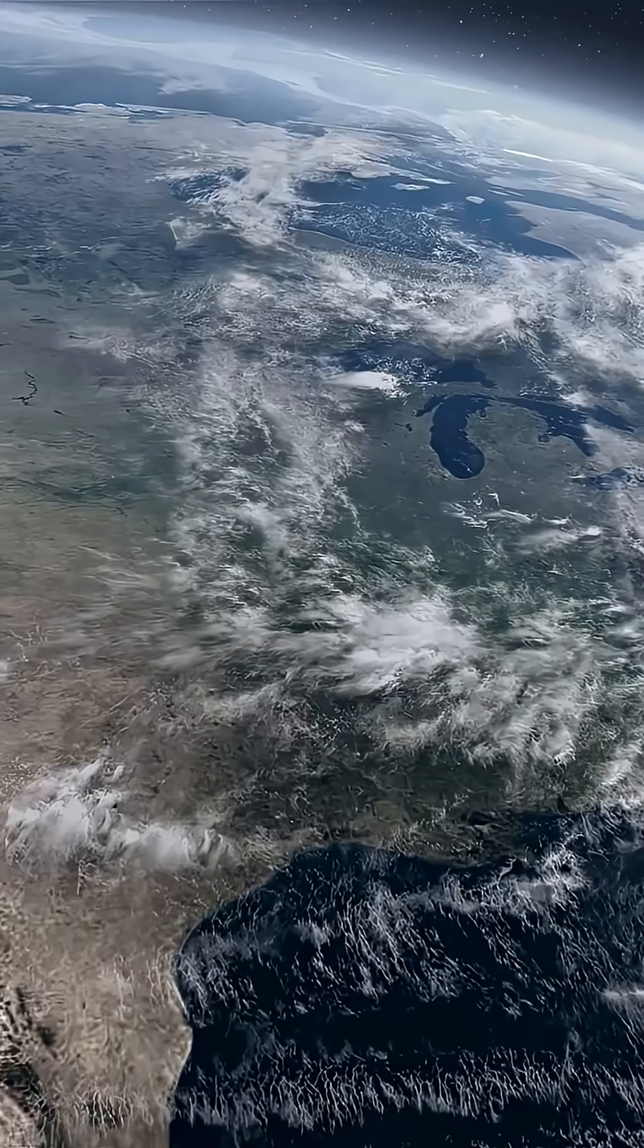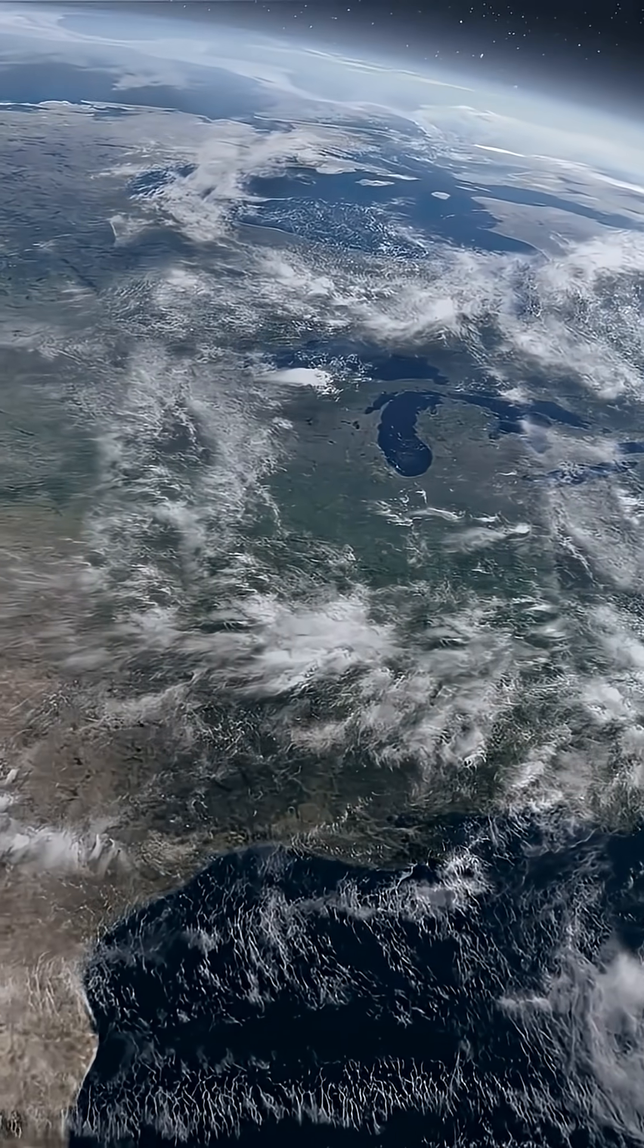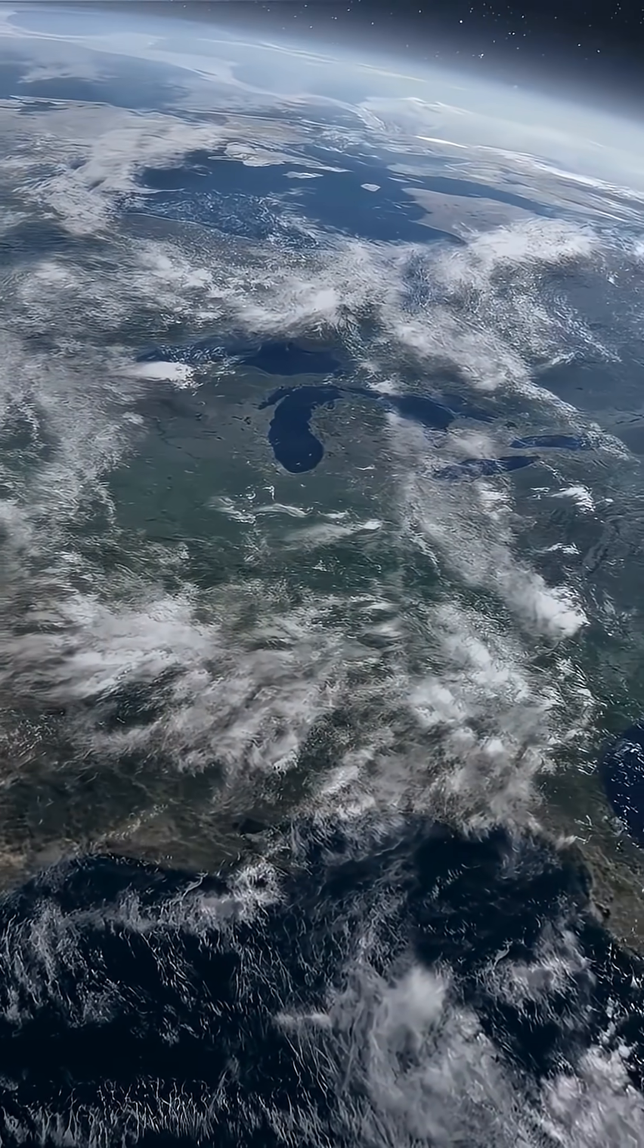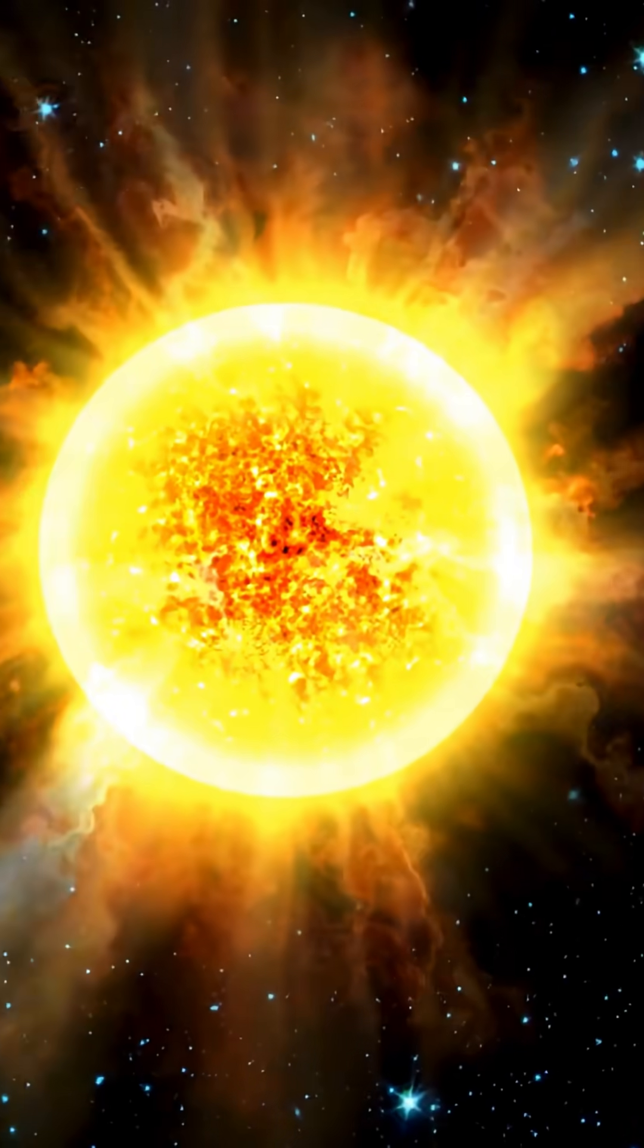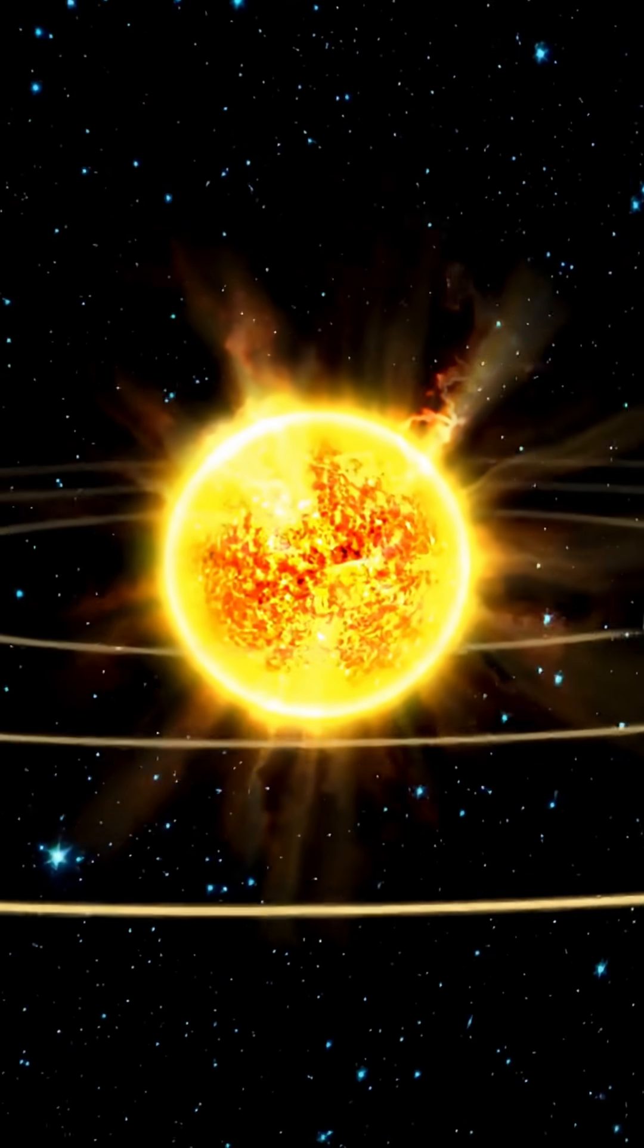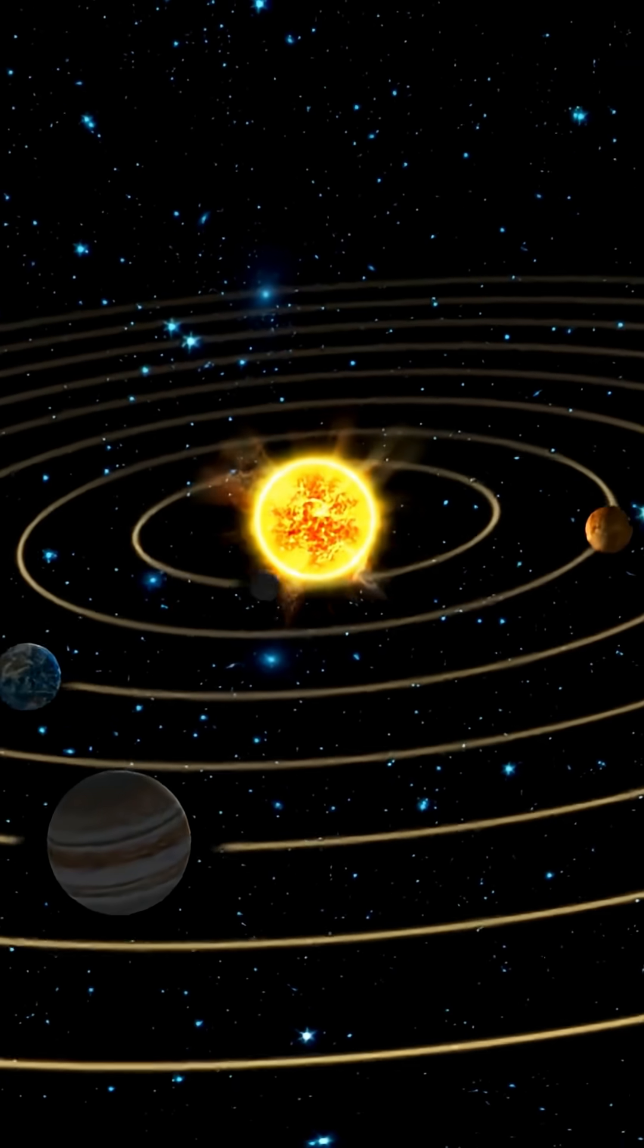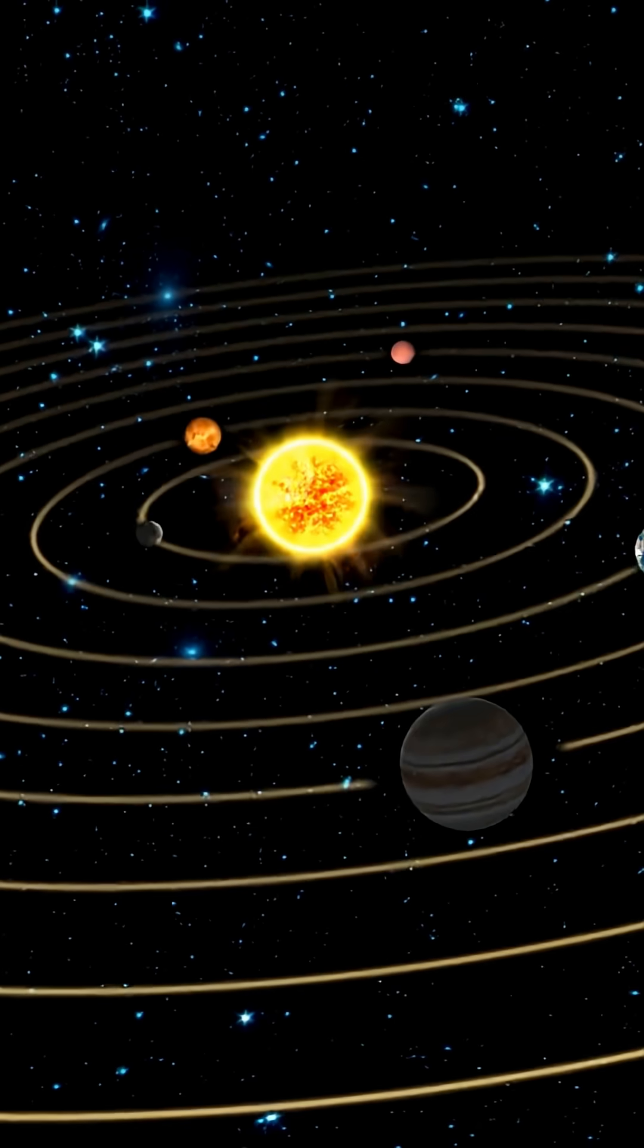Earth sits in what scientists call the habitable zone, or more casually, the Goldilocks zone. It's that sweet spot around a star where temperatures let water exist as liquid, not instantly vaporize it like Mercury, not permanently frozen like Neptune. Water is the universal solvent of life, and our distance from the sun keeps it flowing instead of boiling or freezing solid.